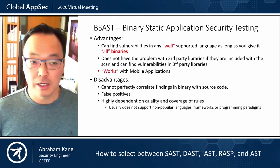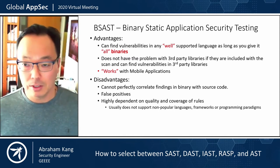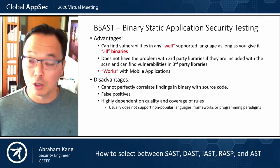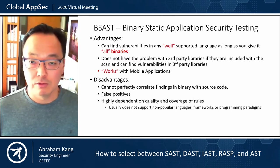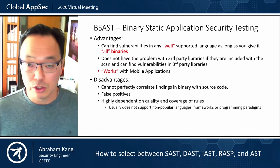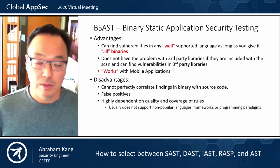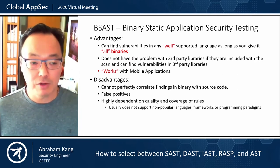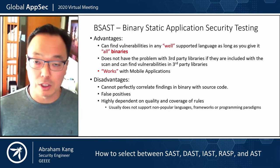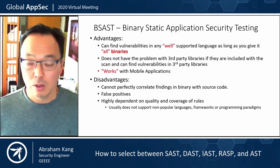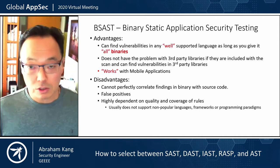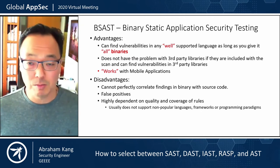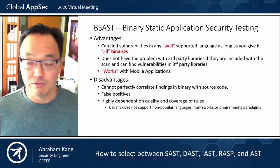If we look at binary static analysis, what we're doing is scanning the binaries. It's going to do well for supported languages as long as you give it all the binaries. One advantage of binary static analysis is that it's going to find the vulnerabilities in your third-party libraries, and it works with mobile applications. From a disadvantages standpoint, you're not going to be able to perfectly correlate when a vulnerability is found in binary to where it is in the source code, because some of that information is lost in translation. It also has high false positives and is highly dependent on the quality and coverage of rules — sharing the same disadvantages as static analysis.